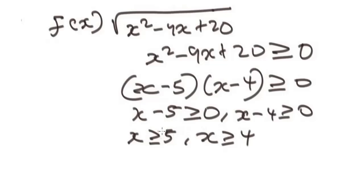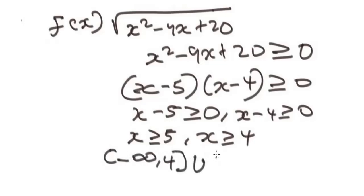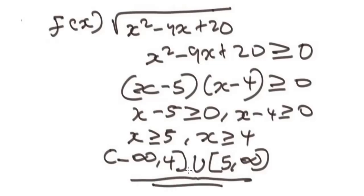To represent the domain in interval notation, since the expression must be greater than or equal to zero, the domain includes x less than or equal to 4 or x greater than or equal to 5, corresponding to the intervals (−∞, 4] and [5, ∞).